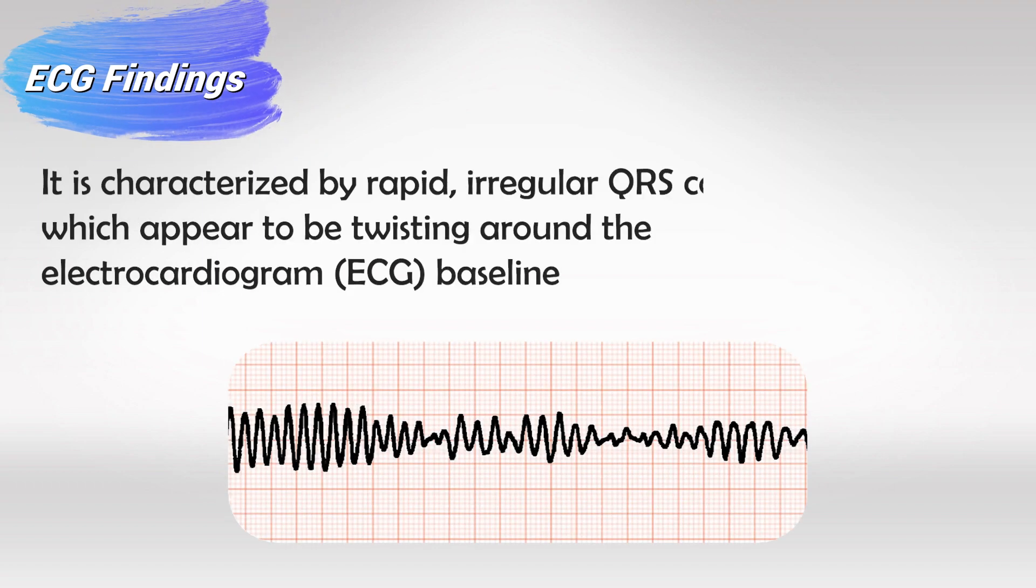In the ECG you will see twisting of points, which we will see right now. Essentially there will be a couple of waves that are contracted together, followed by a few waves that are separated apart, and then another waves that are contracted together. So every few consecutive waves of QRS complexes will be either contracted together or separated apart.